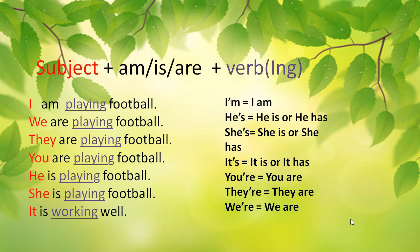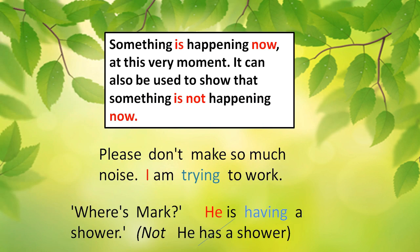They're equals they are. You're equals you are. I'm equals I am. We're equals we are. He's equals he is or he has — it depends on what follows. So if I say 'he is a good man' or 'he's a good man,' that means we used 'is.' But if I say 'he has three cars,' we're talking about possession, so we should use 'has.' Remember, the same idea applies to: she's — she is or she has; it's — it is or it has.